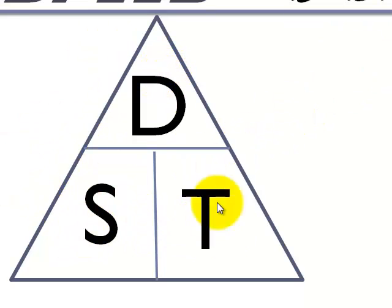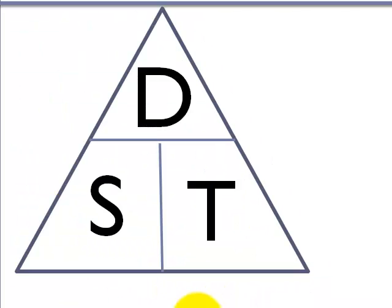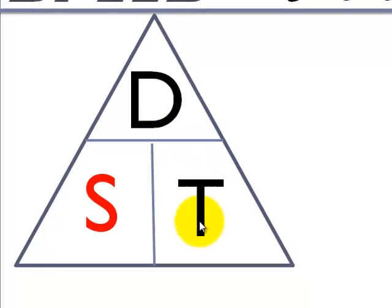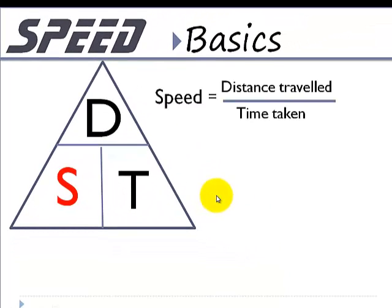Speed is given by distance over time. Speed is given by distance d on top over t, time below. So speed is equal to distance over time. The formula for speed is given by total distance over the time taken for the journey.